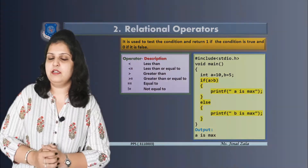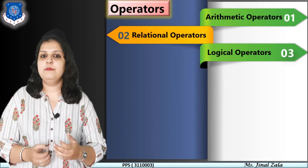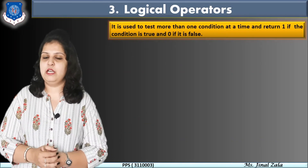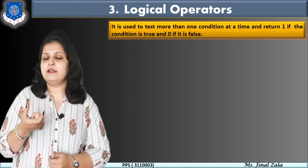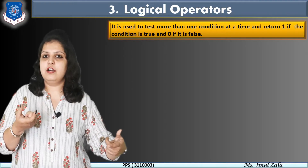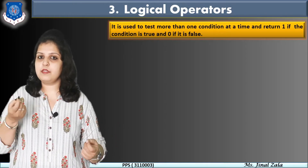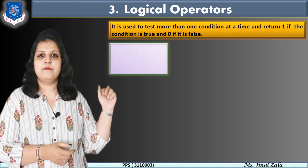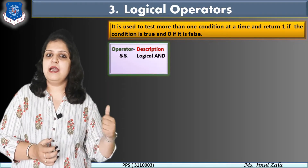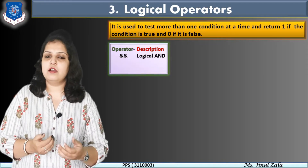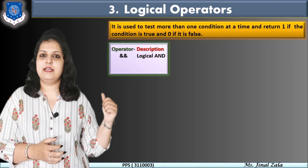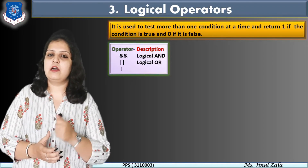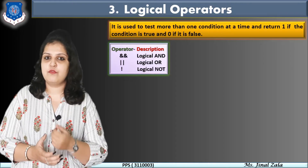Now let's move to the next operator — logical operators. What do you mean by logical operators? They are used when we have multiple conditions. In the previous example we wrote only one condition, that is a greater than b. But when you have more than one condition and want to check all of them, you must use logical operators. The first operator is logical AND, with the sign double ampersand (&&). The second is logical OR, using double pipe (||). And last is logical NOT, using a single exclamation sign (!).